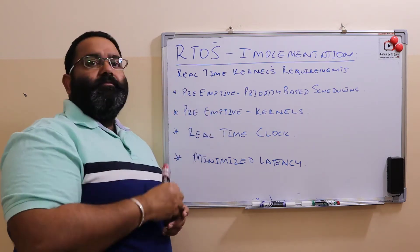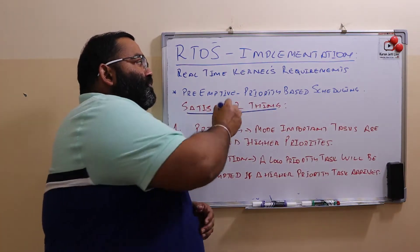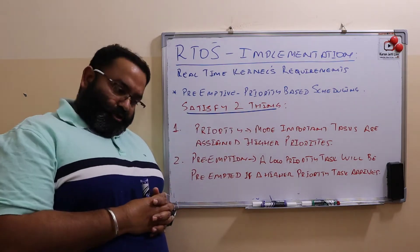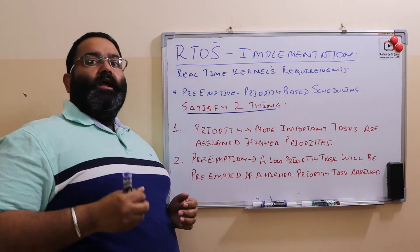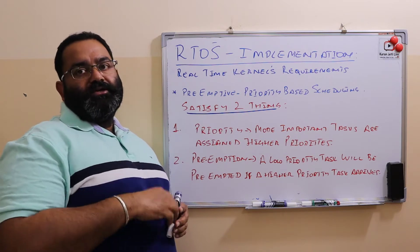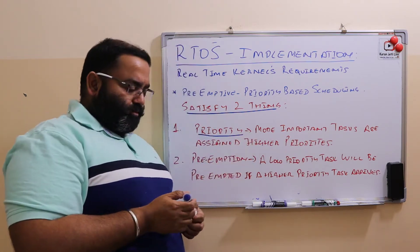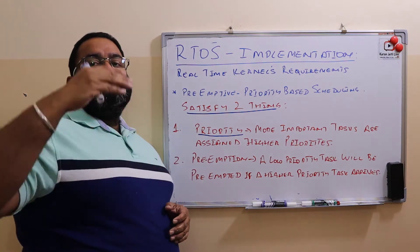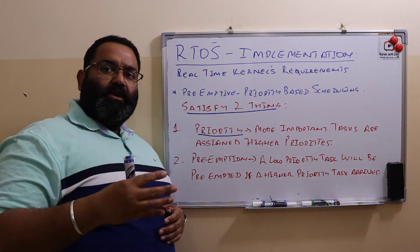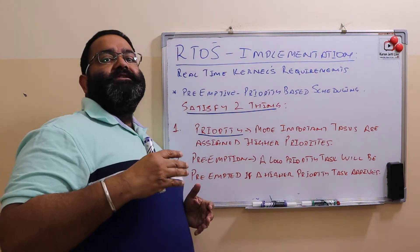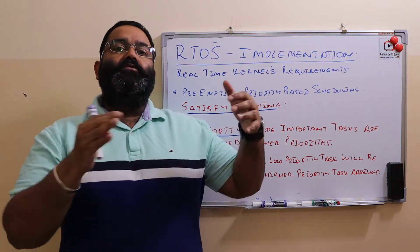We start with preemptive priority-based scheduling. Real-time kernels must have this type of scheduling, which satisfies two properties. The first property is priority — more important tasks will be assigned a higher priority. For each task a priority is assigned, and if the task is important its priority will be high compared to a less important task.